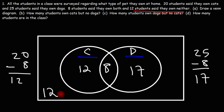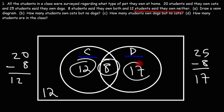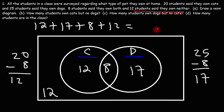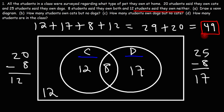Now, how many students are in the class? There are two ways we can find the answer for Part D. The first way uses the completed Venn diagram — we simply add up the four numbers: 12 students who own cats only, 17 who own dogs only, 8 who own both, and 12 who own neither. 12 plus 17 is 29, 8 plus 12 is 20, and 29 plus 20 is 49. So there are 49 students total who were surveyed.